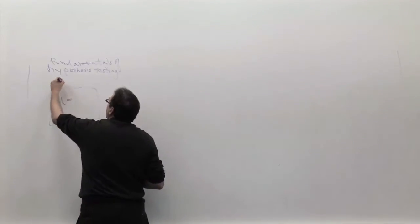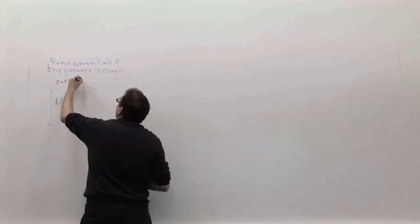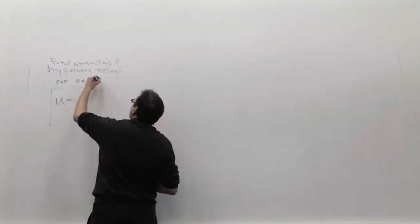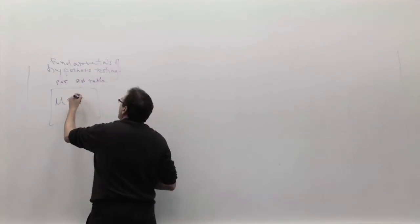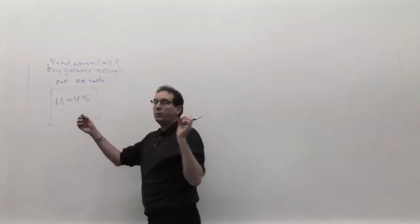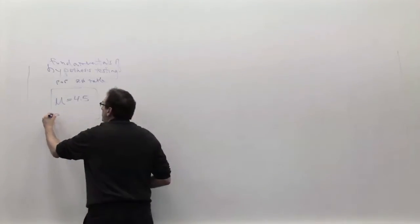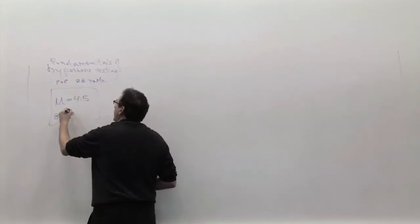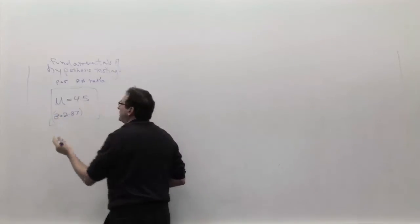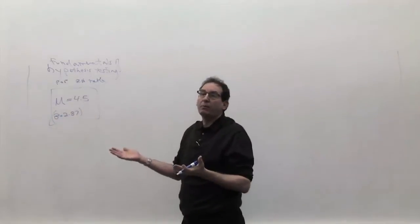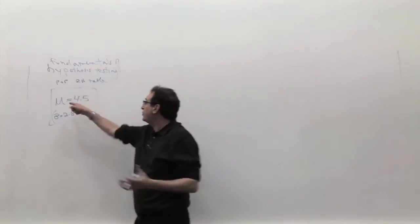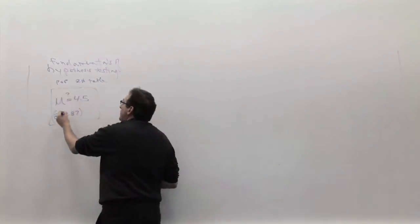The population we're going to use in this example is the random number table. The average, which of course we know if it's a good random number table, which goes between 0 and 9, should be 4.5. We're also going to assume for the first set of calculations that we know the sigma, which is really unrealistic.